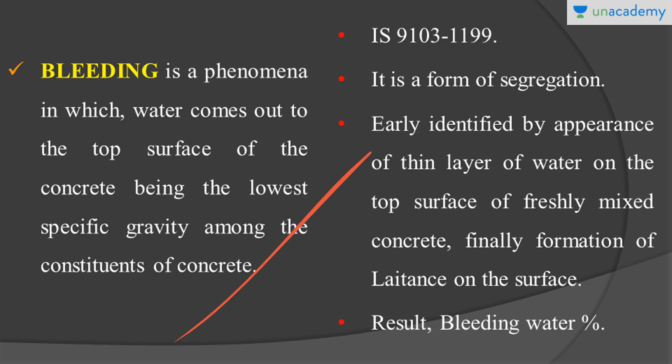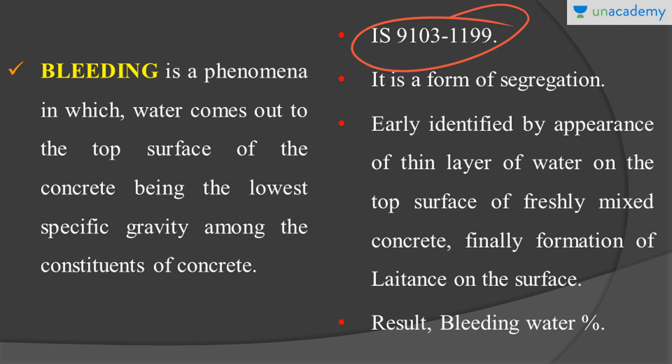Bleeding is a phenomenon in which water comes out to the top surface of the concrete, being the lowest specific gravity among the constituents of the concrete. To know more about bleeding, I have done a separate lesson on bleeding itself, so you can check that. Any laboratory experiment should be based on specific guidelines provided by a recognized institution. Here we follow the IS code 9103-1199, the standard provided by the Indian Standard itself. Please note down this definition as well as the IS code — this will be asked as a Viva question.